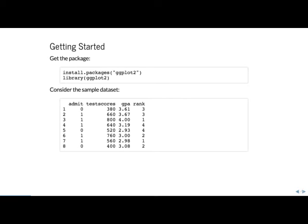The dataset is basically a set of data on students: their test scores from 0 to 800, their GPA from 0 to 4.0, and their ranking in the class. The 'admit' variable shows whether or not they were admitted to a graduate program. Our most important goal here is to visualize this dataset using the ggplot2 package.